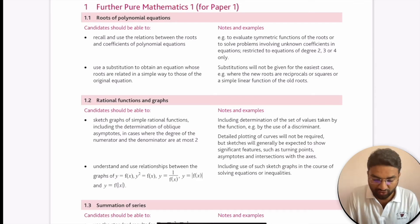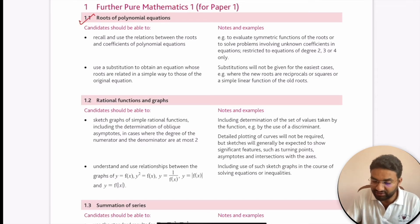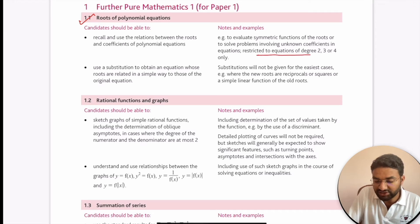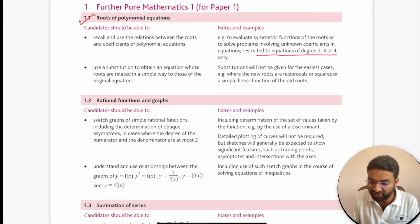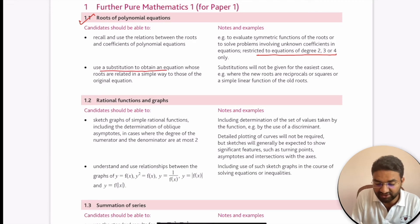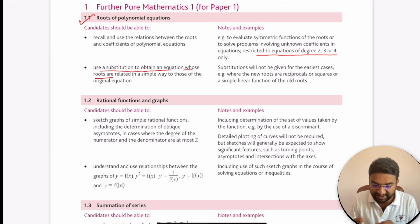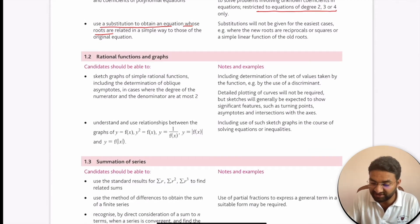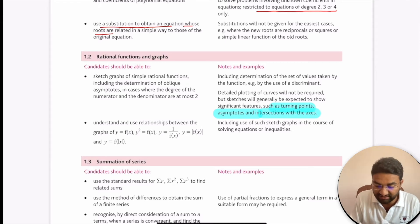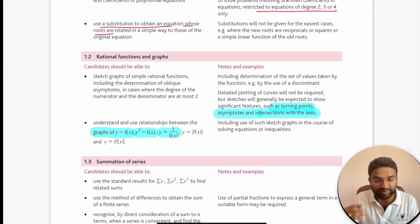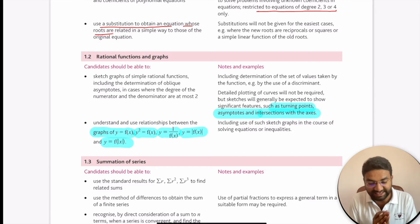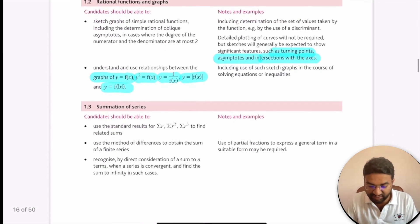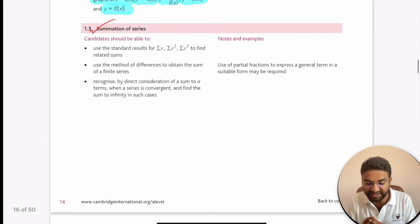Moving on to paper-by-paper content overview. For Further Pure Mathematics 1, the seven topics are as follows. Roots of polynomial equations is restricted to equations of degree two, three, and four only; the substitution method is also used to find roots. For rational functions and their graphs, we discuss turning points, asymptotes, intersections with axes, and graphs of y = f(x), y² = f(x), y = 1/f(x), y = |f(x)|, and y = f(|x|).